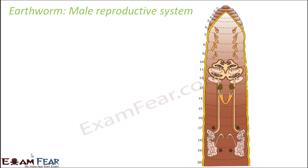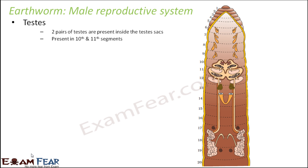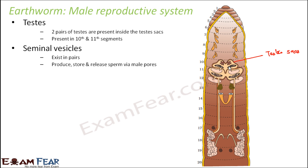Starting with the male reproductive system — the first important part is the testis. Two pairs of testis are present inside the testis sacs, which are sac-like cavities in which the testis are located. They are present in the 10th and 11th segments. This structure you see here is the testis sac, and inside it are located the testis.